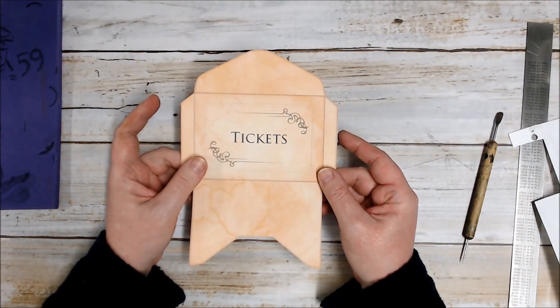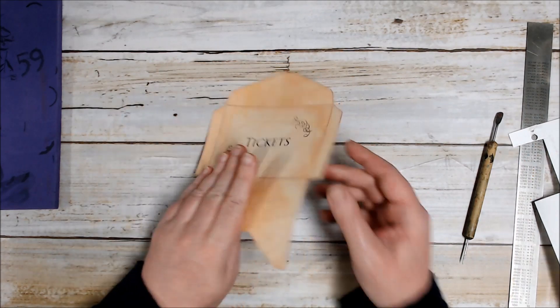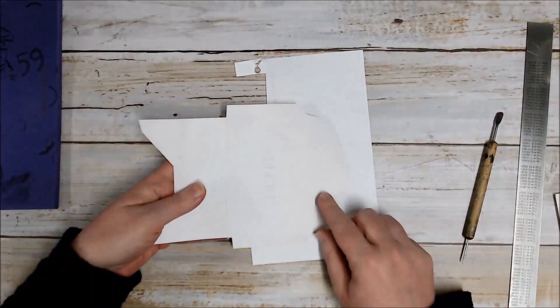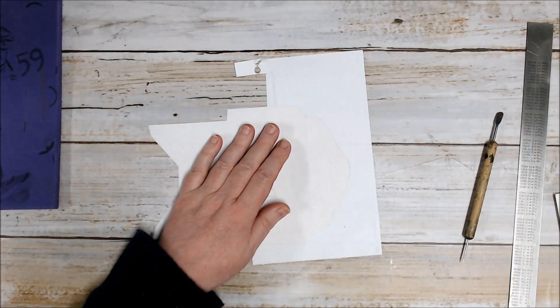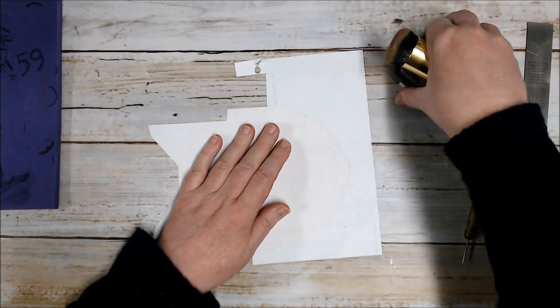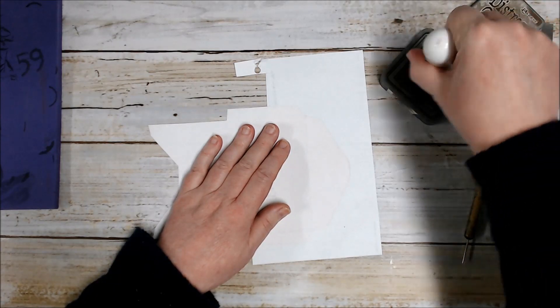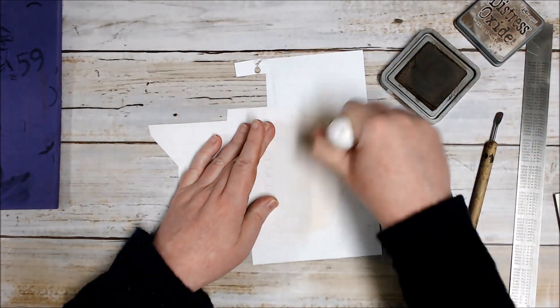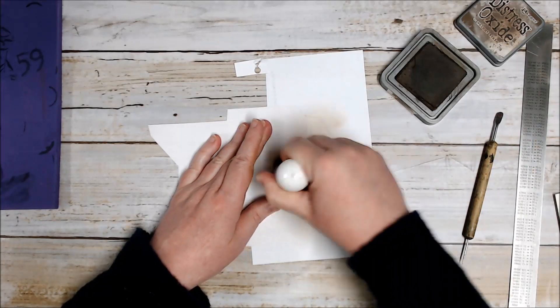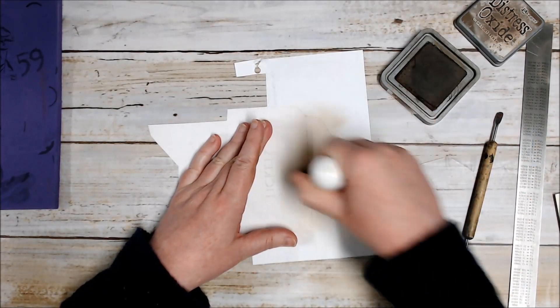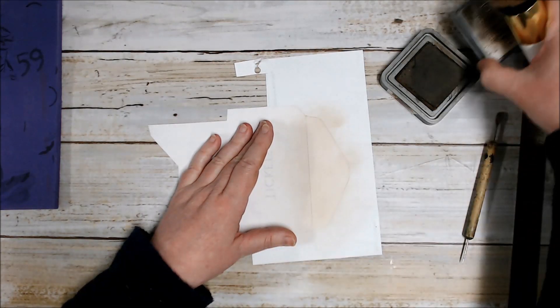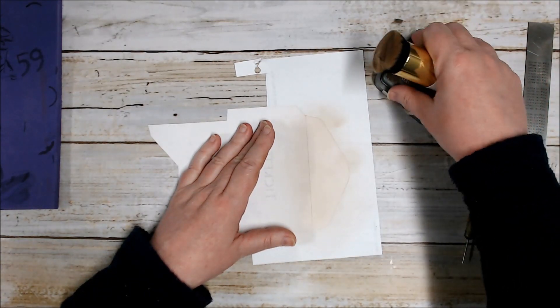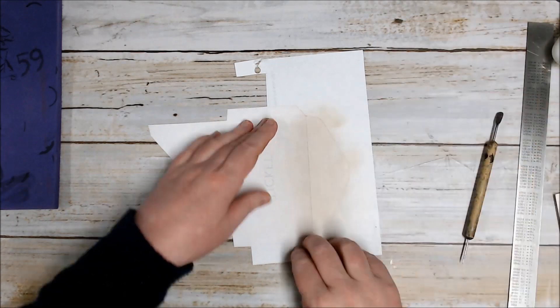I've printed my envelope on just plain white copy paper so I'm going to turn it over. On the back of this flap area here I'm just going to use my ink to add a little bit of color because when I've assembled the envelope you'll be able to see that back flap and also just inside the envelope. If you printed it out on tea dyed paper you wouldn't necessarily need to do that.